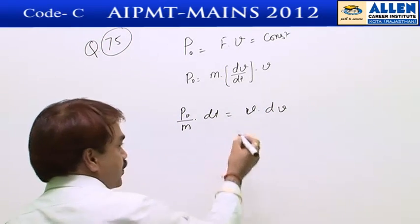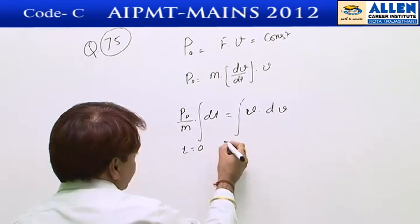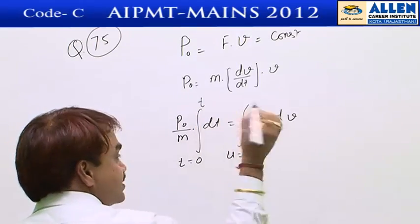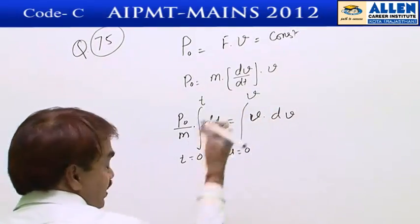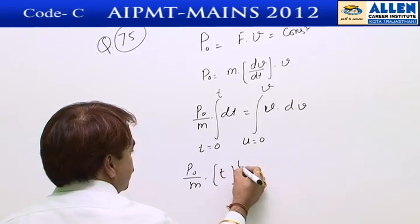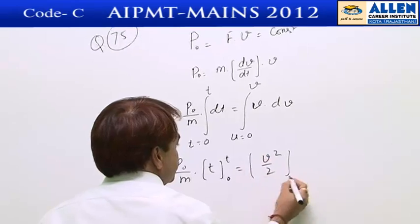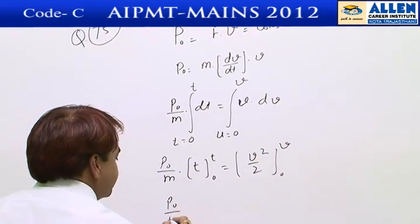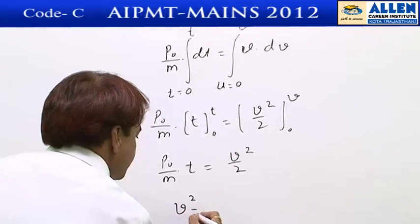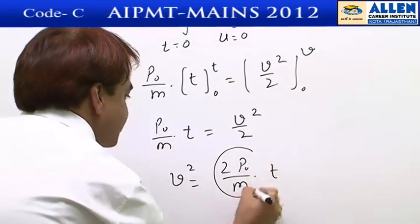We get P naught divided by m into dt equals V dV. Integrating both sides with proper limits: at t equals 0 the car is at rest, so the initial velocity is 0, and at any instant t the velocity is V. After integration: P naught by m into t equals V squared by 2, giving V squared equals 2P naught t divided by m.